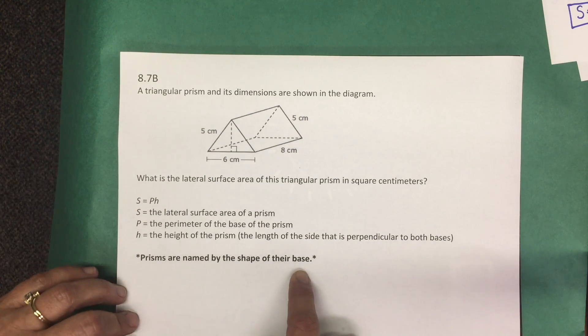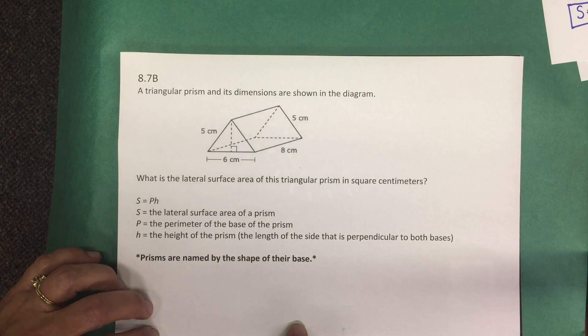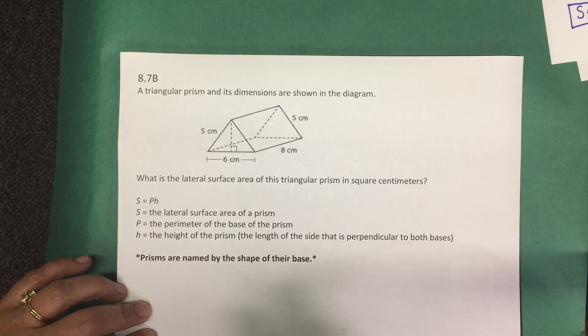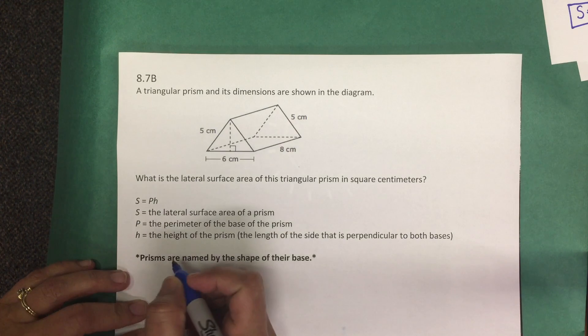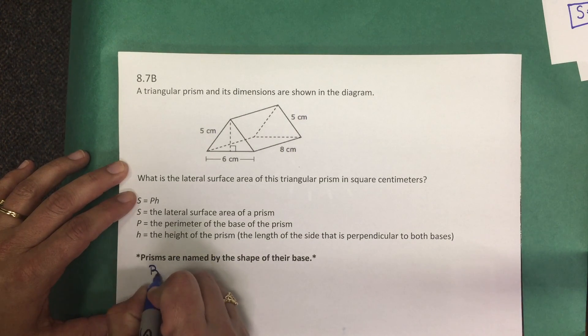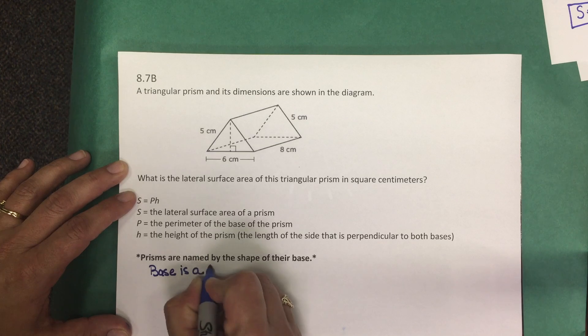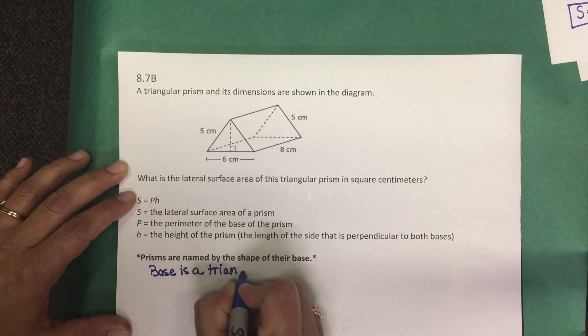Also important note is that prisms are named by the shape of their base. So since we're told in the problem that this is a triangular prism, we know that the base is a triangle.